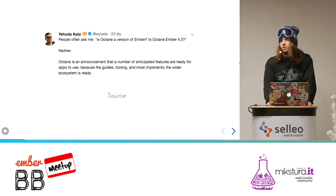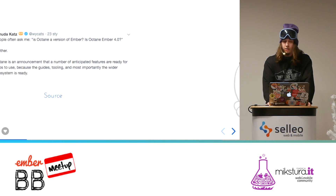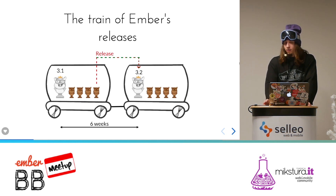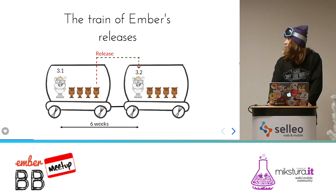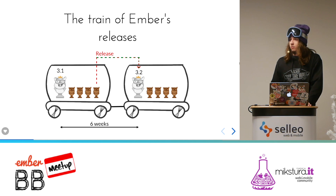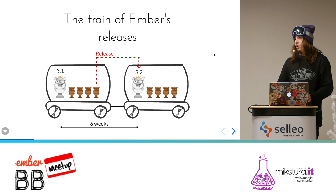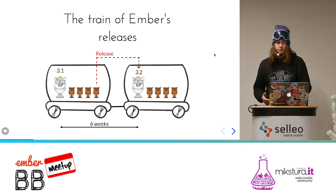To understand what editions are, we need to think about the Ember release cycle and the model in which we are developing Ember. Every six weeks we have a new stable release, and the current beta is promoted to the new stable release. The cycle repeats every six weeks.